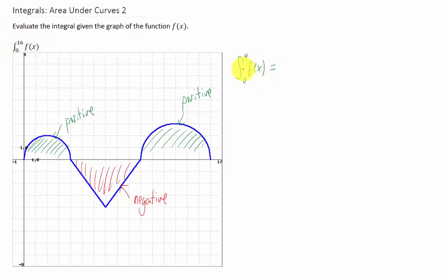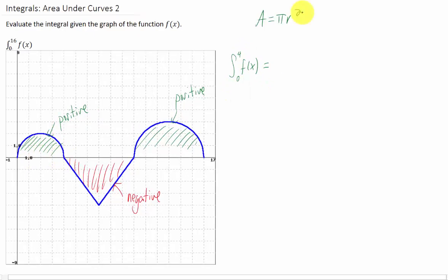I'll use a little bit of notation just so you can see it. The integral from 0 to 4 is going to be half the area of this circle here. Keep in mind that the area of a circle is pi r squared, so the area of a semicircle is pi r squared divided by 2.